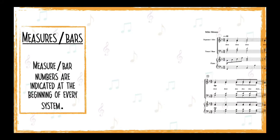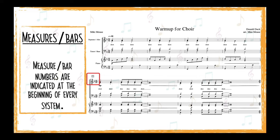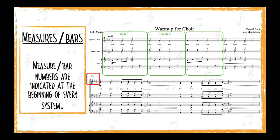Measure, or bar, numbers are usually indicated at the beginning of every system. Sometimes a measure number may also appear in the middle of the system, especially if the piece is longer — that helps us find a certain place in the score faster. It is important to remember that within the system, music is sung simultaneously, and we move from one measure to the next together with all other parts at the same time.